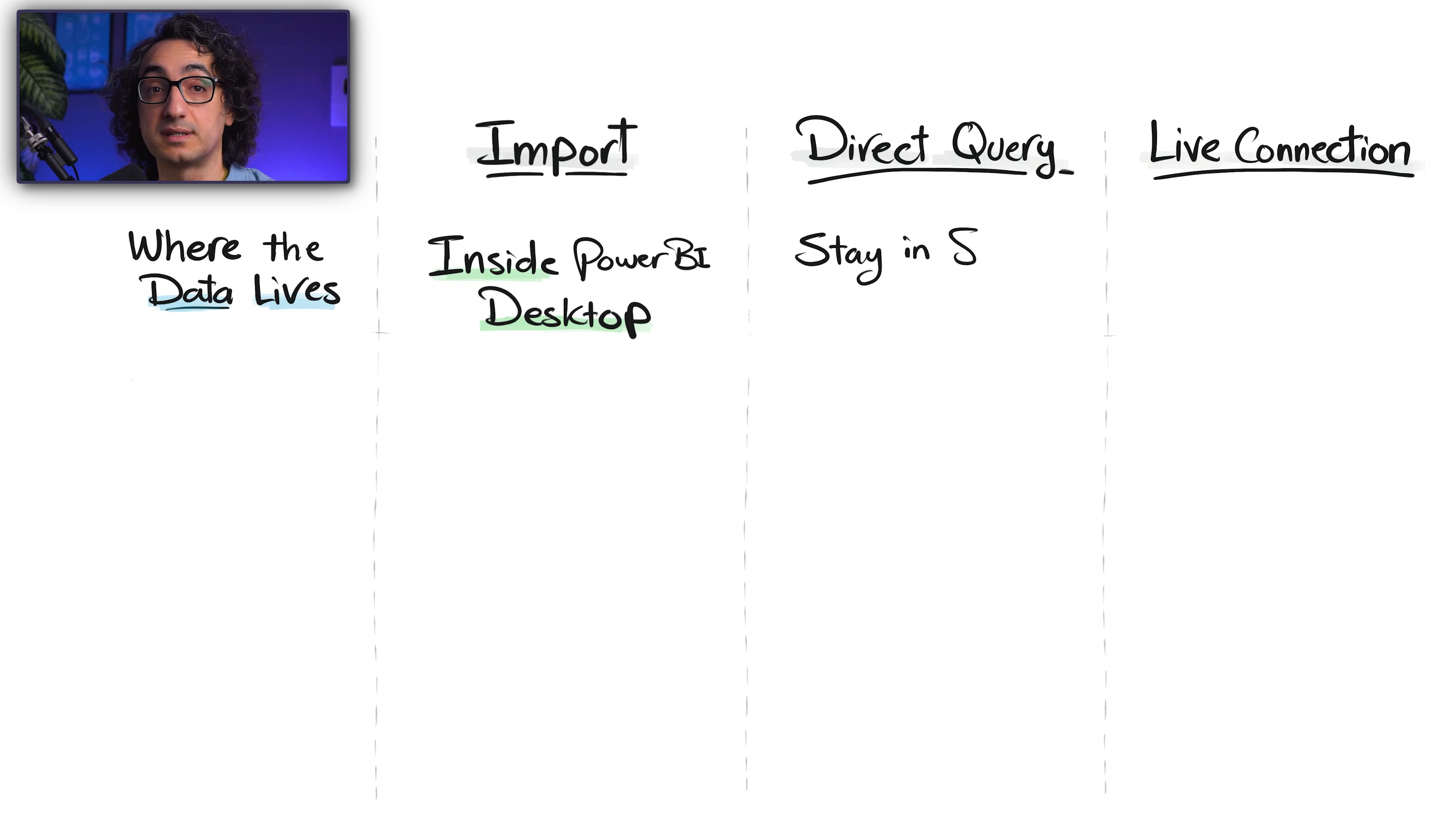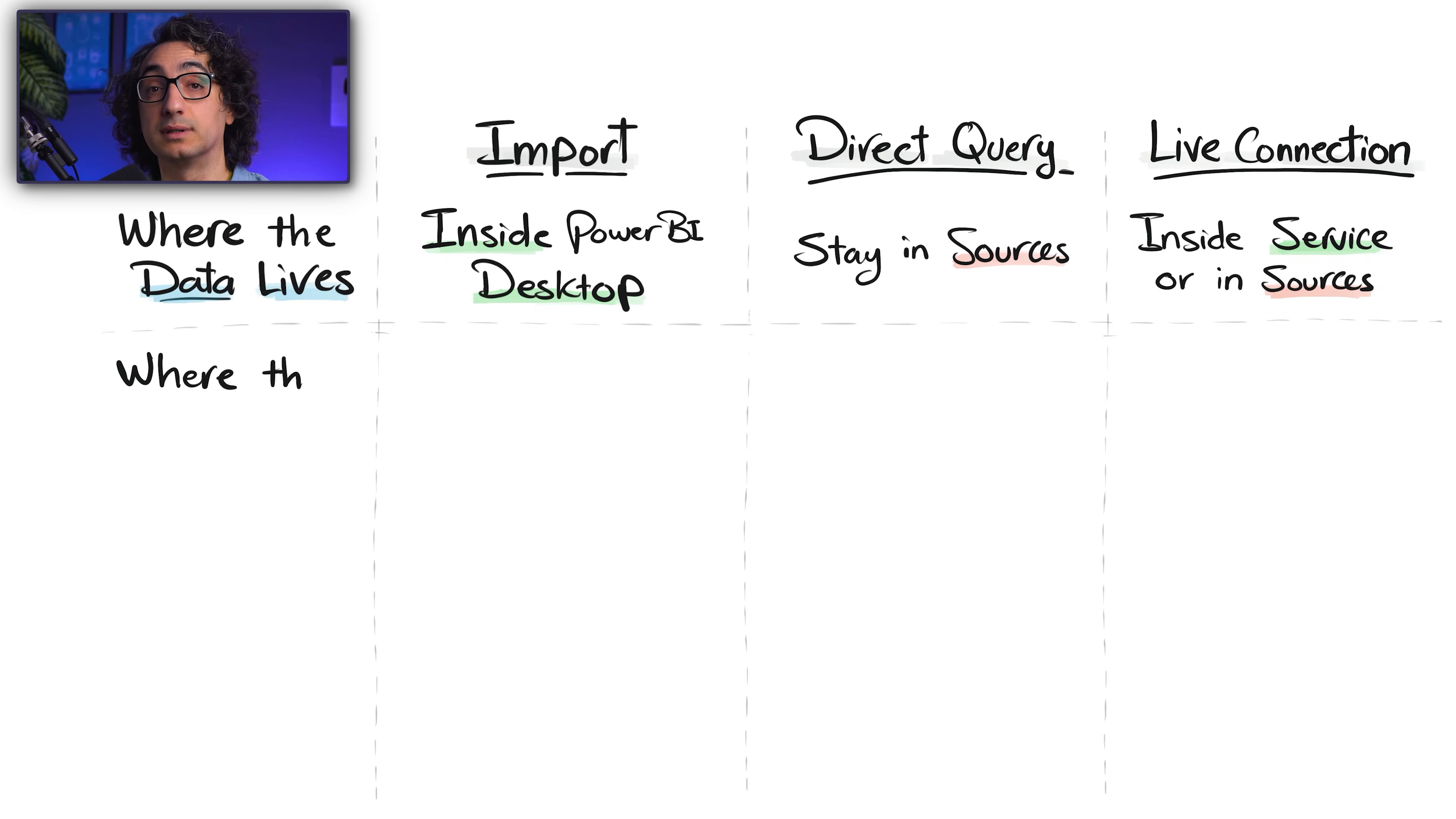With Direct Query, the data stays in the original source system. Nothing is stored inside Power BI. With Live Connection, it depends on the shared semantic model. So if the model uses Import, then the data is imported. If it uses Direct Query, then the data stays in the source system.